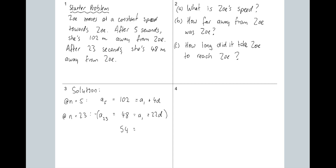And 4D minus 22D — make sure you get your negatives right — is negative 18D. Divide both sides by negative 18 and you get D equal to negative 3. So you've now worked out the difference: as each second passes, Zoe has travelled three metres towards Zoe.